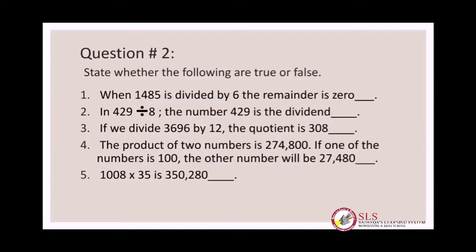The third part: if we divide three thousand six hundred and ninety-six by twelve, the quotient is three hundred and eight. We will divide 3696 by twelve — if we get three hundred and eight as the quotient, our answer is correct. Rough work will be done in the rough work column.